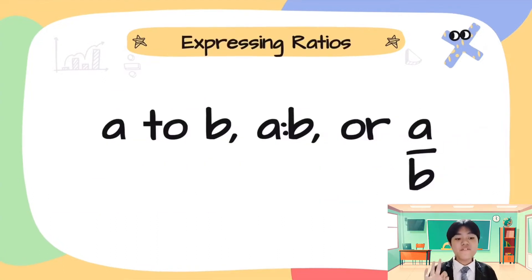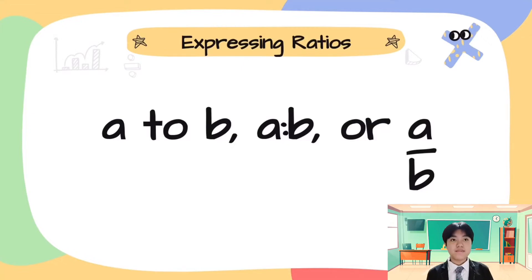Here are the three different ways on how we can express a ratio, which is A to B, A:B, or A over B. Teacher, may I ask if we use one out of the three ways, would it still be correct? Yes, Denise, we can express our ratio in any of the three ways and it still would be correct. But remember that ratios are best solved while expressed in fraction form because this allows us to do math on them.